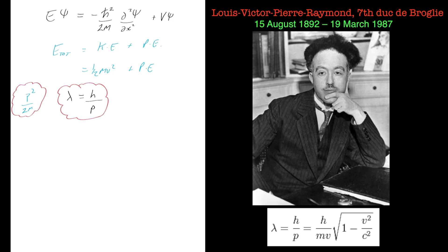Another equation we're going to need is the one for the wave number, which we remember from the previous tutorial — the value k. Now k is simply 2π over lambda, and we're going to need to mix up the de Broglie relationship with this value as well. So we'll put that in a bubble as well.